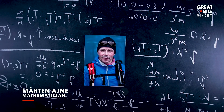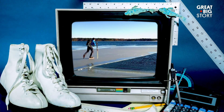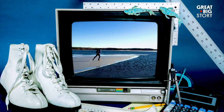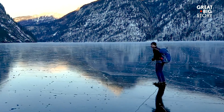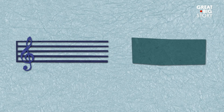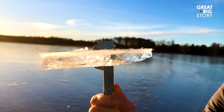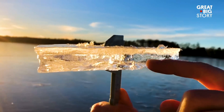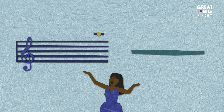Meet Morten Einar. He's a mathematician who enjoys riskier hobbies than most. He's been skating on thin ice for 40 years. When he's skating, he's also listening. The thinner the ice, the higher the pitch. Just about when the ice is about to break — at around three centimeters — the pitch is at the higher C, supposedly the highest note of the soprano singer.